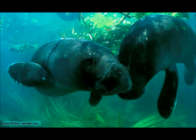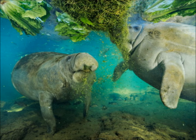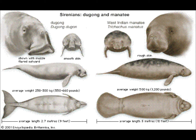Manatees use their fins to bring food towards their claw-shaped mouths, which are used like clamps to rip food apart. Manatees have rough skin mostly covered in barnacles, and they are 3 meters in length and weigh about 1,200 pounds.